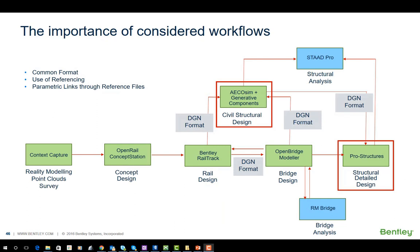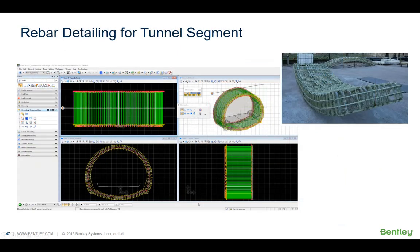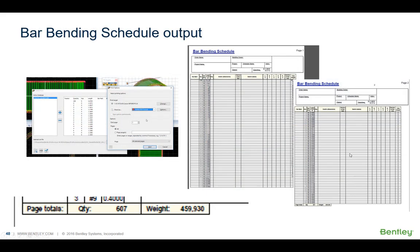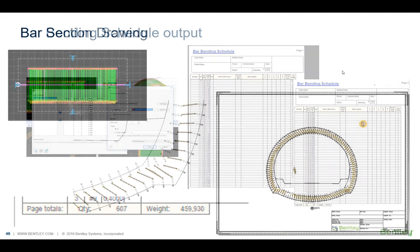Reinforcing the importance of considered workflows: try to get file formats all talking to one another, and use referencing or linking to maintain parametric links through reference files. We can take that a step further and look at reinforcement detailing — for example, a tunnel segment. ProStructures can take geometry from many sources, reference it in, and fill it with reinforcement. The tunnel segment modelled in Ecosim can be referenced into ProStructures to add tunnel reinforcement — steel reinforcement inside the concrete — and produce bar bending schedules using the tools in ProStructures, which is dedicated to reinforcement design and drawing production.